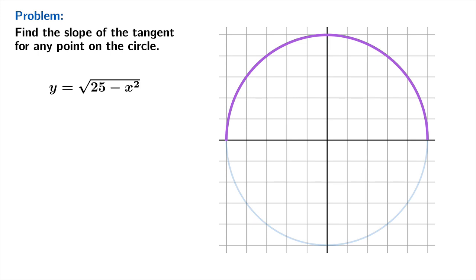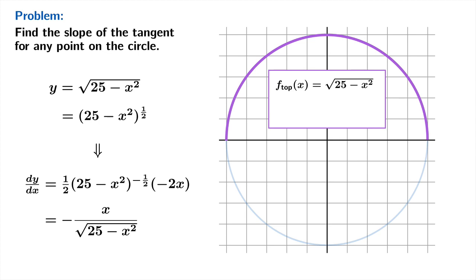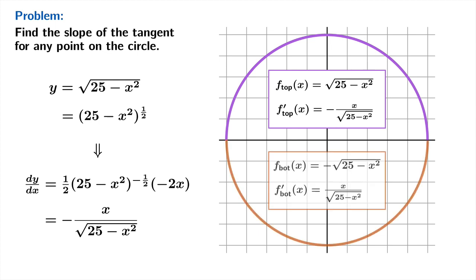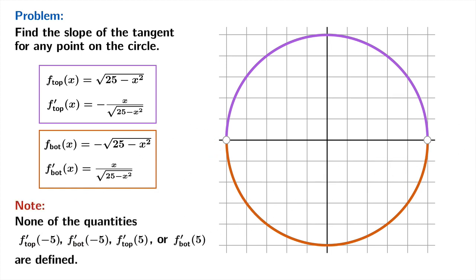For the upper half, we express the function as (25 − x²)^(1/2), apply the power rule and chain rule, and find dy/dx = −x / √(25 − x²). Labeling this f_top, we get a corresponding formula for the bottom half differing only by a factor of −1. Note that plugging in x = ±5 into either formula gives zero in the denominator, so those values are not in the domain.